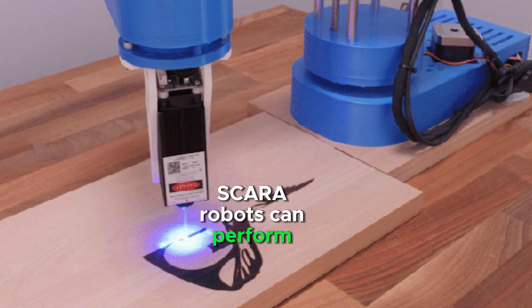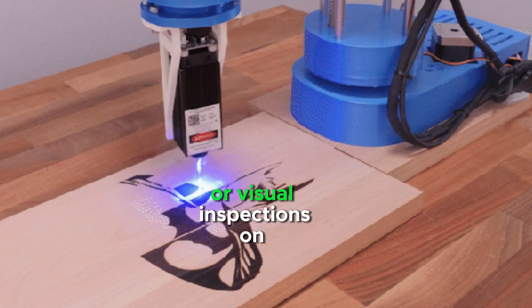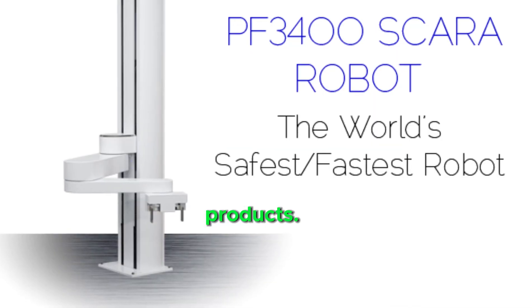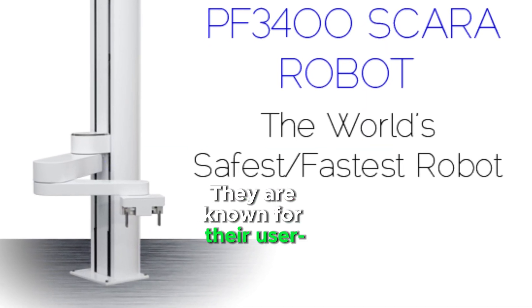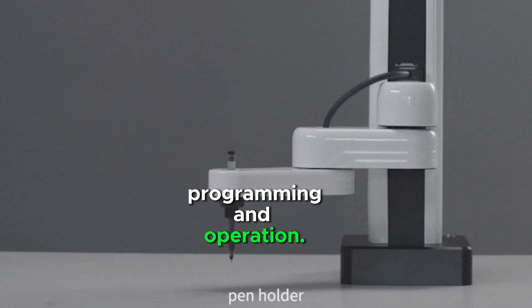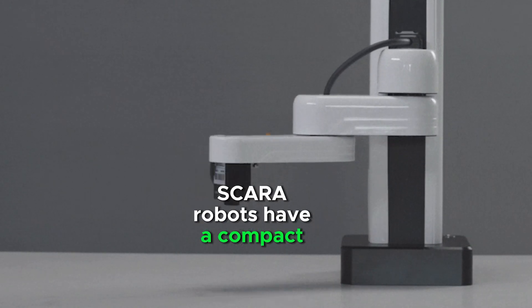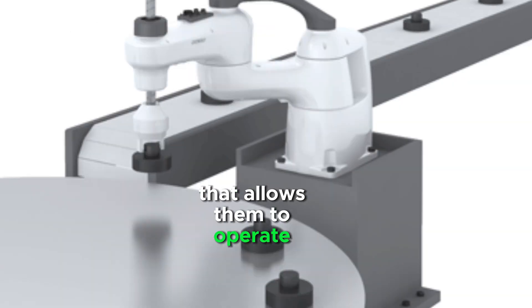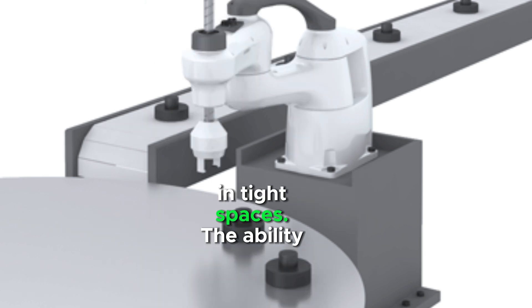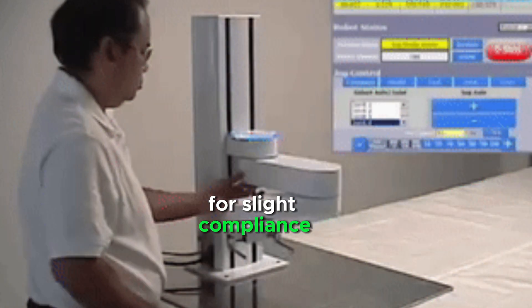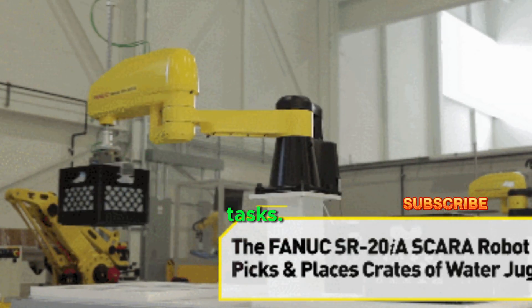SCARA robots can perform delicate testing procedures or visual inspections on products. They are known for their user-friendly programming and operation. SCARA robots have a compact design that allows them to operate efficiently in tight spaces. The ability for slight compliance helps with delicate assembly tasks.